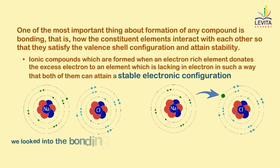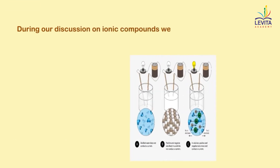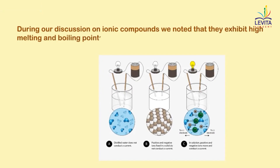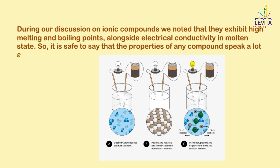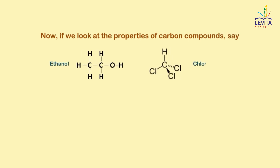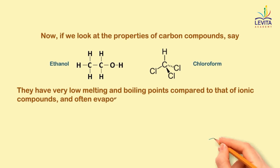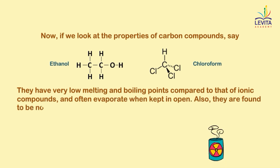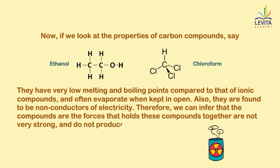For instance, we looked into the bonding in NaCl, MgCl2, CaCl2, etc., which are formed by ionic bonding. During our discussion on ionic compounds, we noted that they exhibit high melting and boiling points alongside electrical conductivity in molten state. So it is safe to say that the properties of any compound speak a lot about the type of bonding. Now, if we look at the properties of carbon compounds — say ethanol or chloroform — they have very low melting and boiling points compared to ionic compounds and often evaporate when kept in open. Also, they are found to be non-conductors of electricity. Therefore, we can infer that the forces that hold these compounds together are not very strong and do not produce any ions as well.